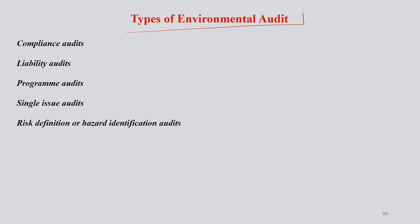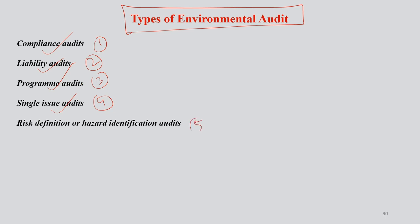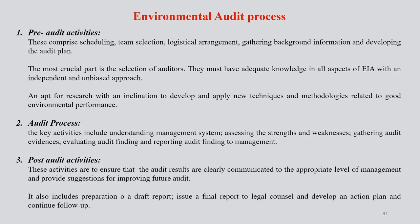The different types of environmental audit are: number one, compliance audit; number two, liability audits; number three, program audits; number four, single issue audits; and number five, risk definition or hazard identification audits. These five types are often carried out at the very last stage of the EIA exercise. Now let us see how the environmental audit process actually takes place.